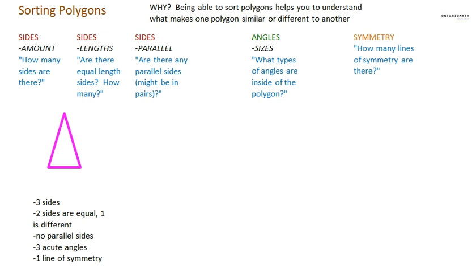So, looking at this triangle, I'll answer the first question. So, how many sides are there? There are three sides, right? One, two, three. Are there equal length sides? And if so, how many? Yep. Two sides are equal. And one is different, it's shorter.